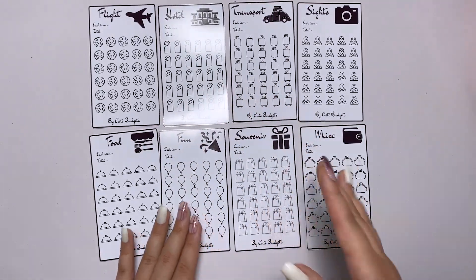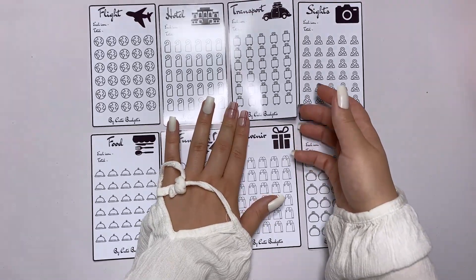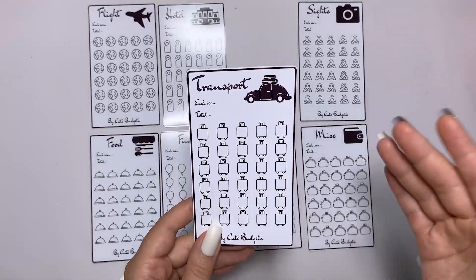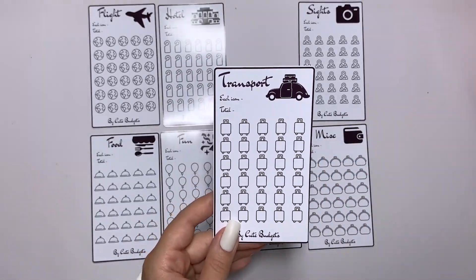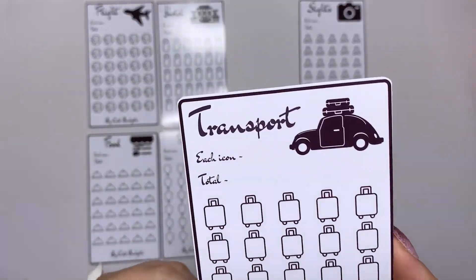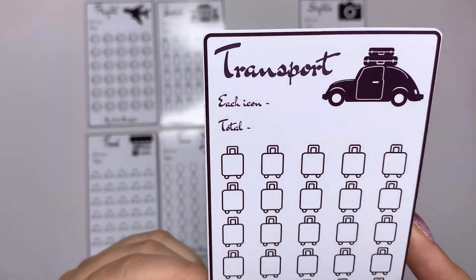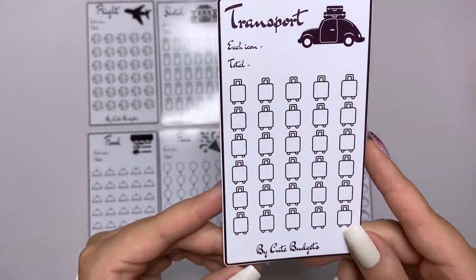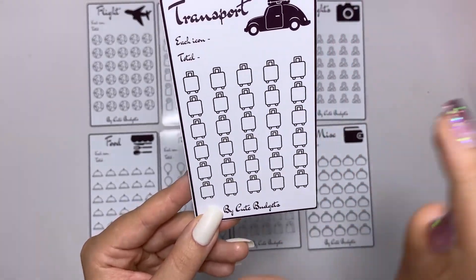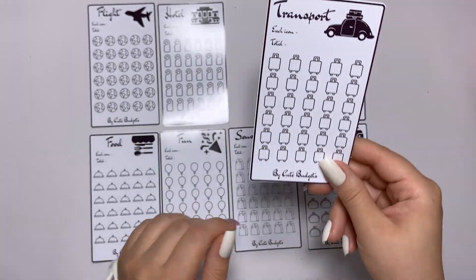After hotel we need transport. We need to go from airport to hotel and also to move around the city. Now this is how it looks. It has again 30 luggage bag icons and you can decide how much each icon equals.